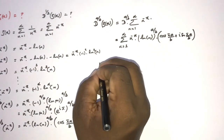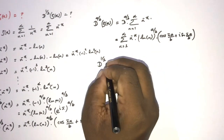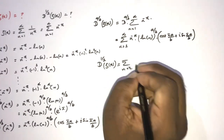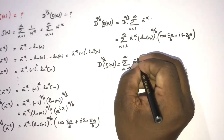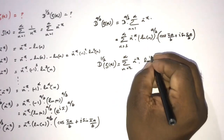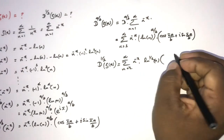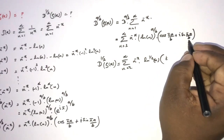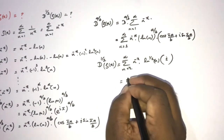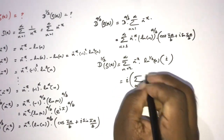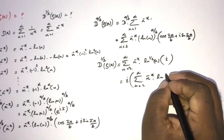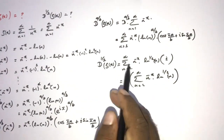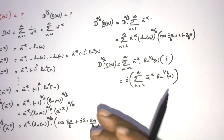Now we need the half derivative. Setting a over b equal to one half, d^(1/2) theta of x equals the sum from n equals 2 to infinity of n to the minus x times natural log of n raised to the one half, times cosine of pi over 2 — which is 0 — plus i times sine of pi over 2 — which is 1. Therefore, d^(1/2) theta of x equals i times the sum from n equals 2 to infinity of n to the minus x times natural log of n raised to the one half. This is the half derivative of the theta function, and the answer is purely imaginary. Thank you for watching.